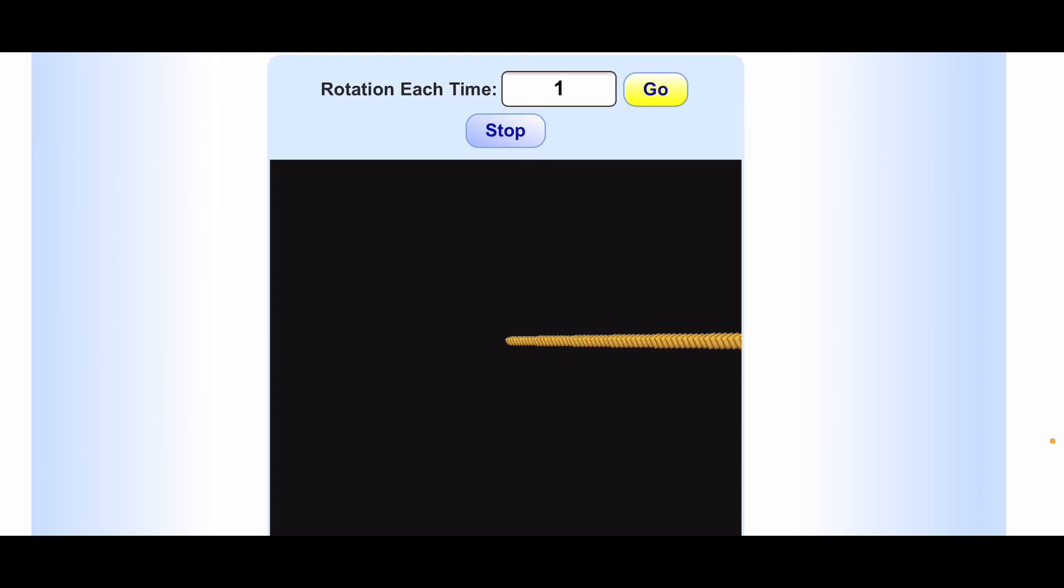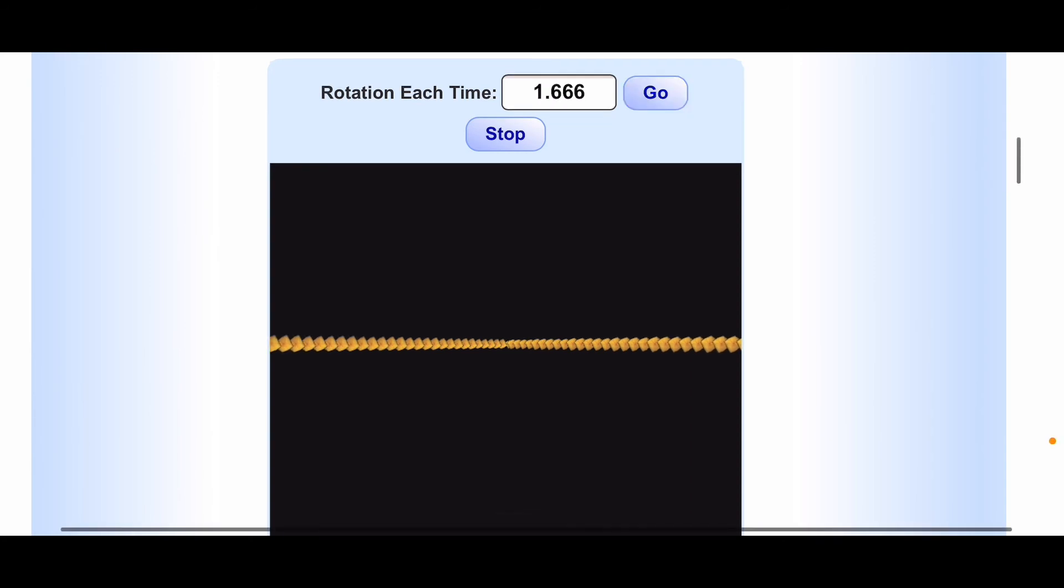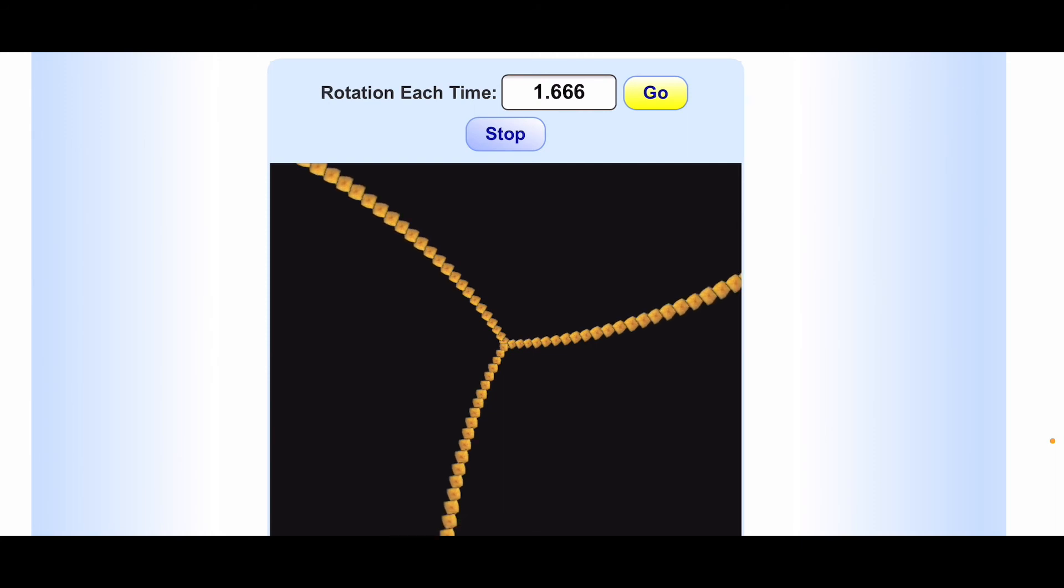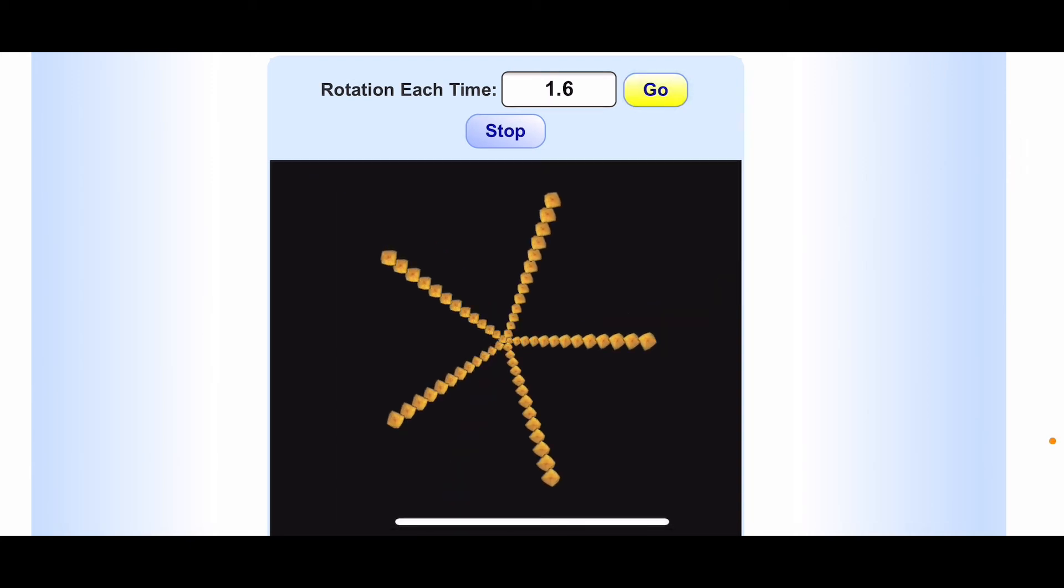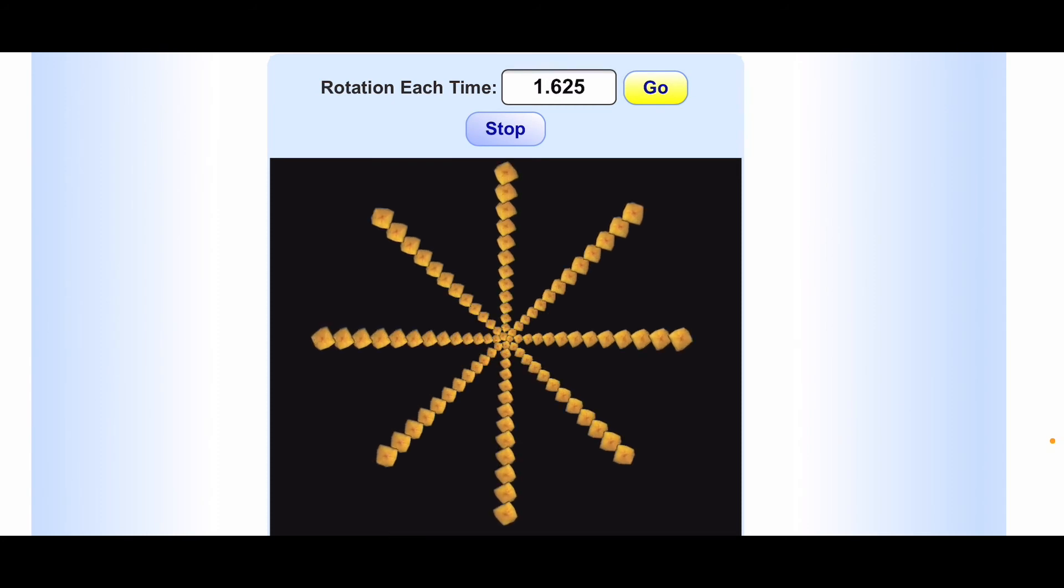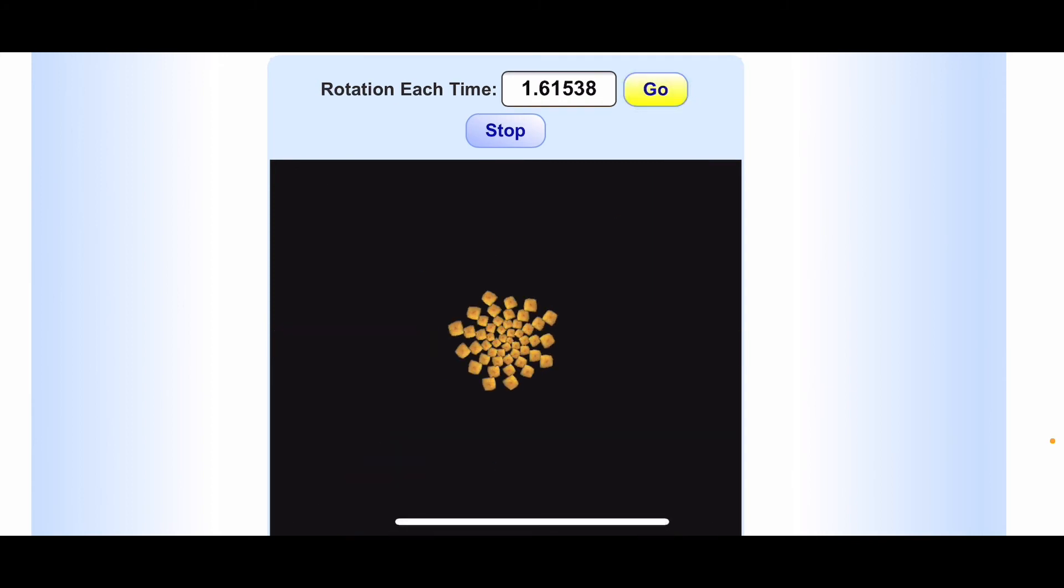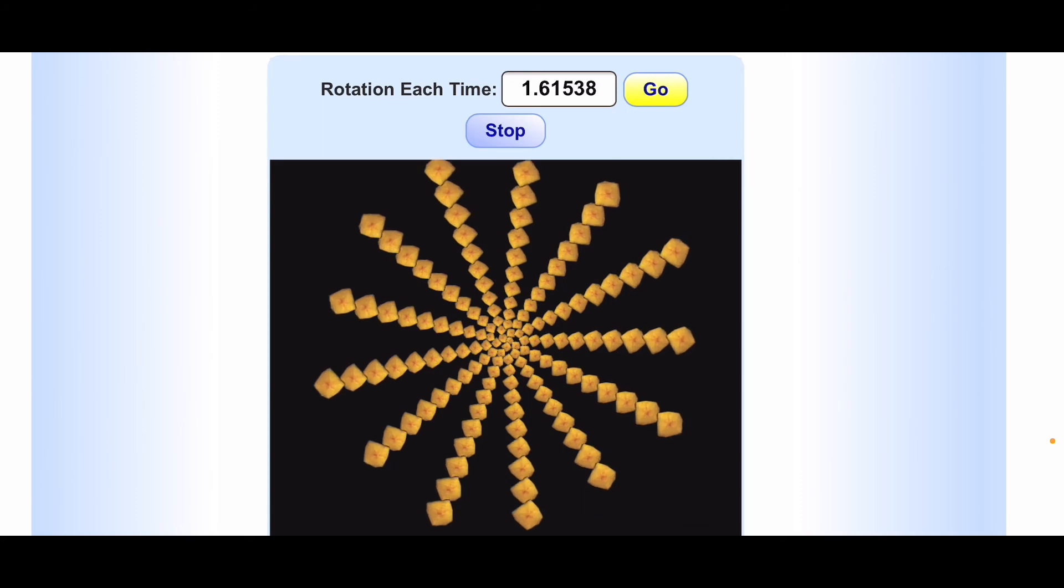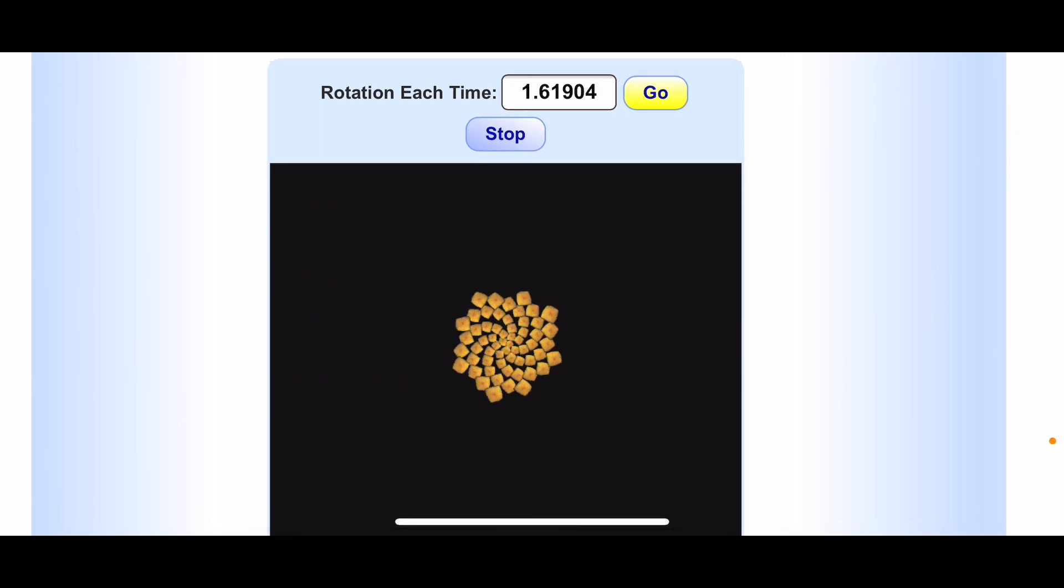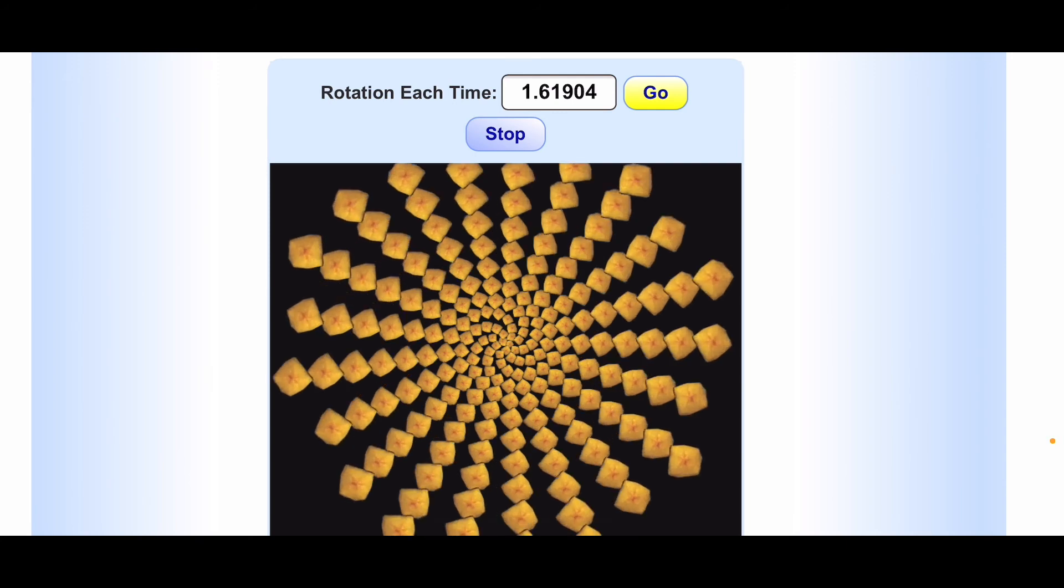So let's try entering in some fractions. 3 over 2 or 1.5 would look like this. 5 thirds or 1.6 repeating ends up having 3 spokes. This is because we're taking 5 one-third turns. Let's try a few more: 8 fifths or 1.6, 13 over 8 or 1.625. I'll do a couple more. Just pay attention to the number at the top.